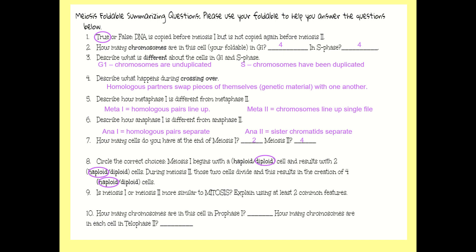Question 9 asks: is meiosis 1 or meiosis 2 more similar to mitosis? The answer is meiosis 2, because they both involve the splitting of sister chromatids, and at that point the duplicated chromosomes line up single file in the middle of the cell.